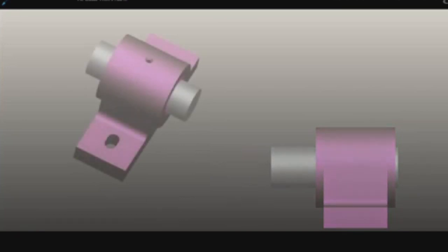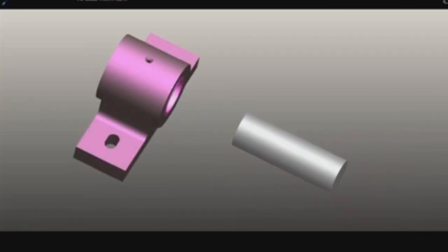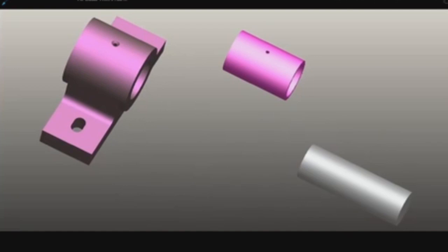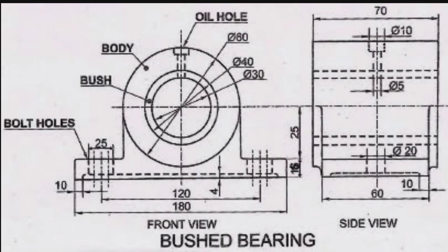Bearings are used in order to reduce the friction between two surfaces that are sliding against each other. Bushings are most commonly used for machinery with rotating or sliding shafts. Here is the assembly drawing of Bushed Bearing. There is front view and there is the side view.